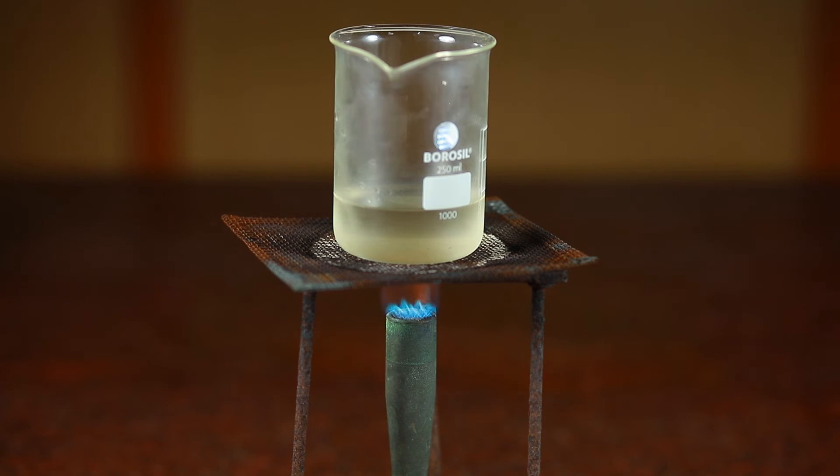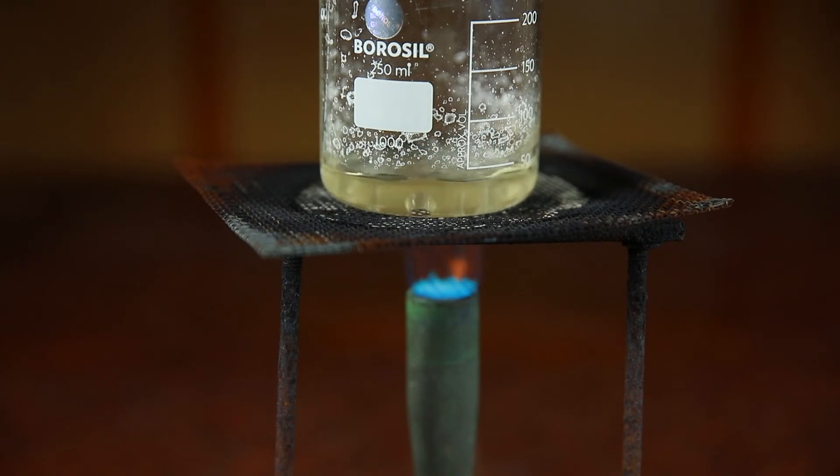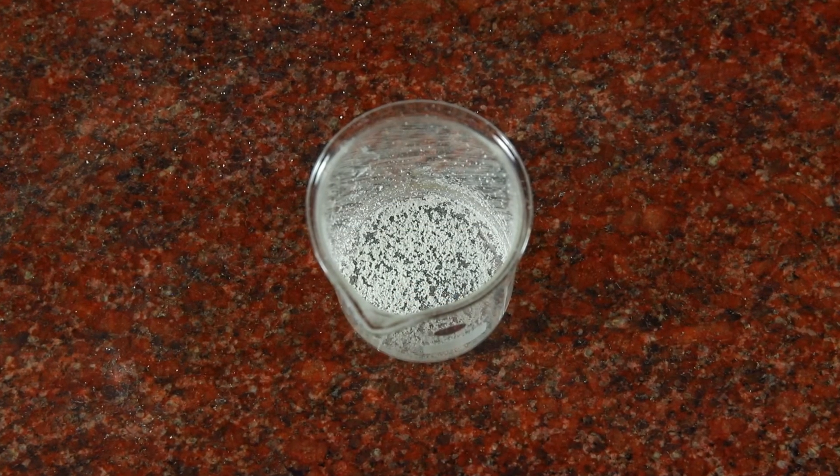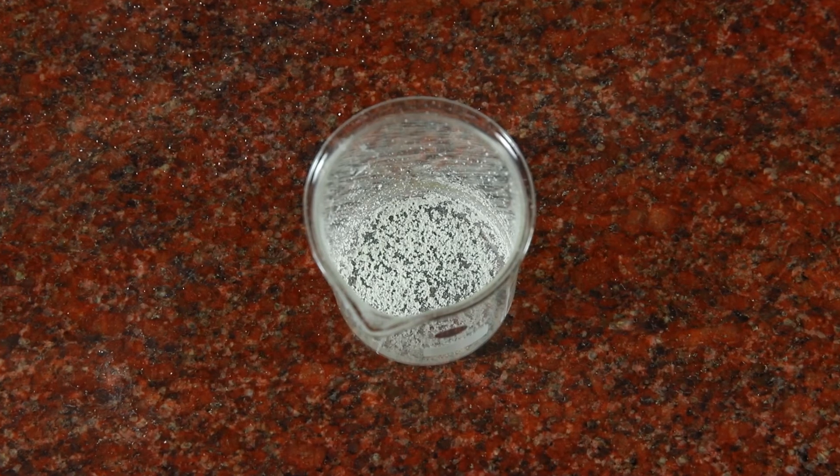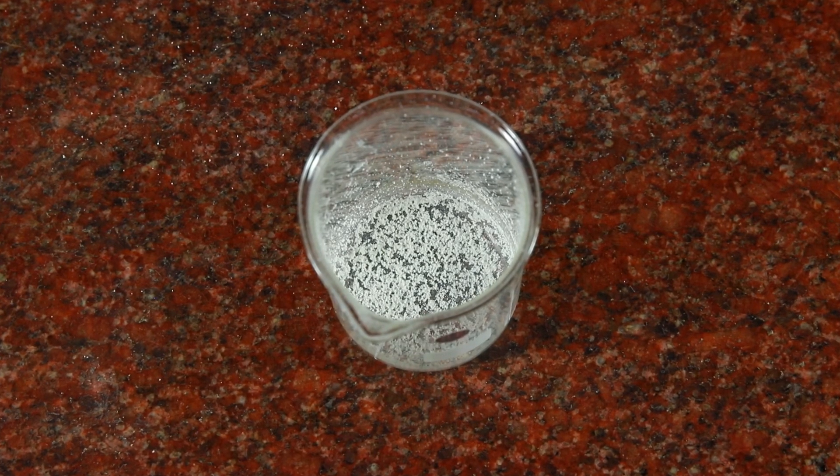Heat the filtrate obtained in the previous step using the burner. Heat the content until water evaporates. We observe that on heating the filtrate, water is evaporated and a white colored substance, common salt, is left at the bottom of the beaker.